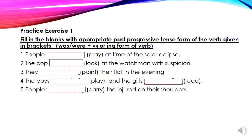Practice exercise 1. Fill in the blanks with the appropriate past progressive tense form of the word given in brackets. The past progressive tense form is was or were plus V4, or the ING form. Was or were depends on the subject — plural subject uses were, singular subject uses was. Number 1: people dash pray at the time of the solar eclipse. Subject is people, plural, so we use were. ING form of pray is praying. Answer: people were praying at the time of the solar eclipse.